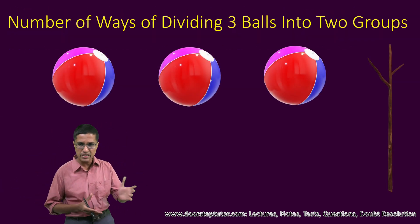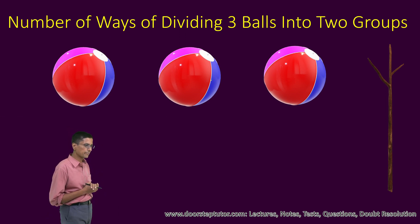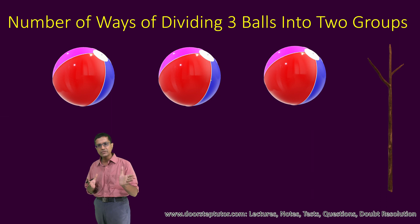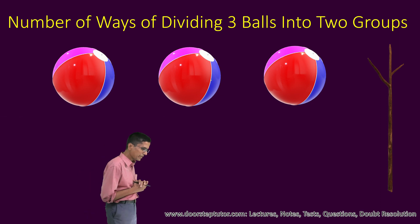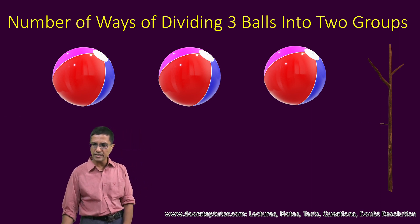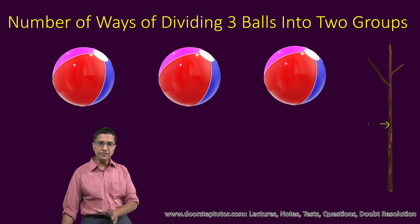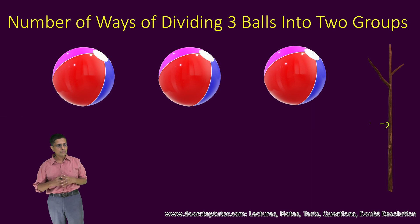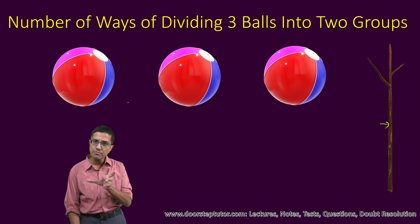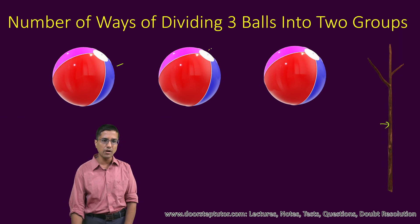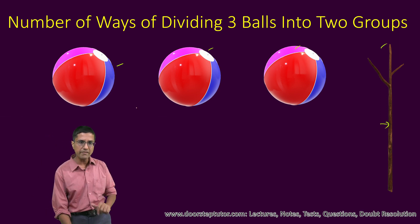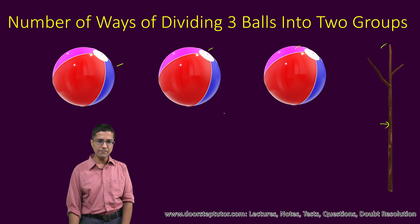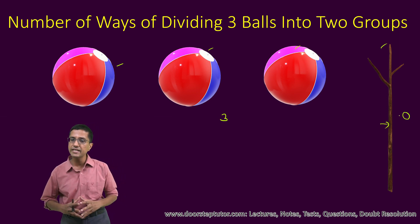Before we deal with this permutation problem, let us understand the case of dividing three balls into two groups. So we are trying to divide these three balls into two groups — how can we possibly do it? Here we use a trick: we create a separator. We have a separator in the form of a stick, and the division of these three balls can be thought of as all possible arrangements of these three balls plus the separator. Here is one possible arrangement where all three balls are on one side and on the other side of the separator there is nothing — zero balls.